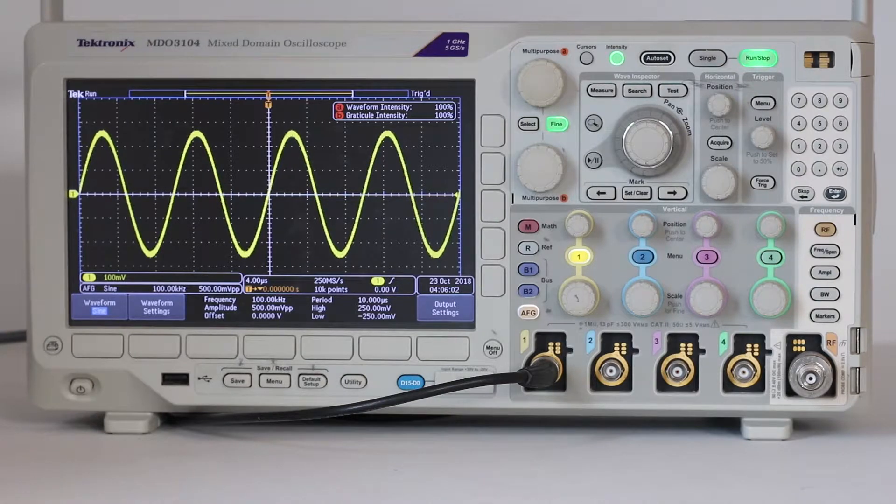In the oscilloscope configured to display the time domain, units of time are represented by horizontal distance along the x-axis.